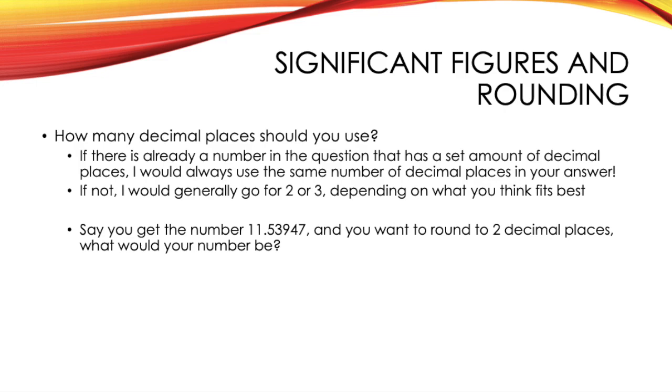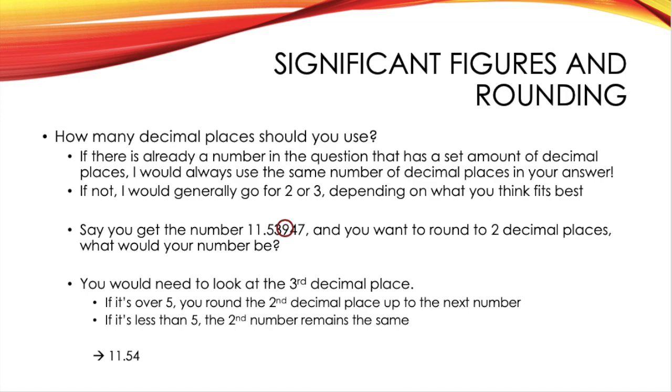Next, we'll look at rounding. So, say you have the number 11.53947 as your answer, and you want to round to two decimal places. What would your number be? What you would need to do is look at the third decimal place. If it's over five, you round the second decimal place up to the next number. But if it's less than five, the second number just remains the same. So, as you can see, our number here is a nine. Because that's higher than five, we'd round the second decimal place, and our answer would become 11.54.